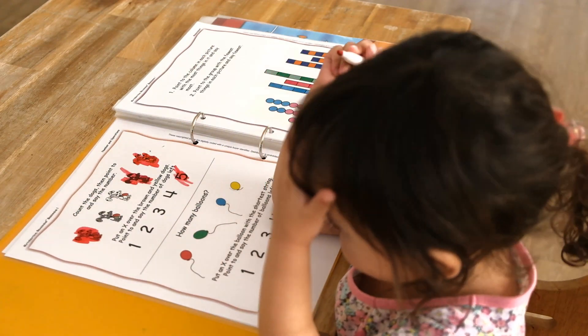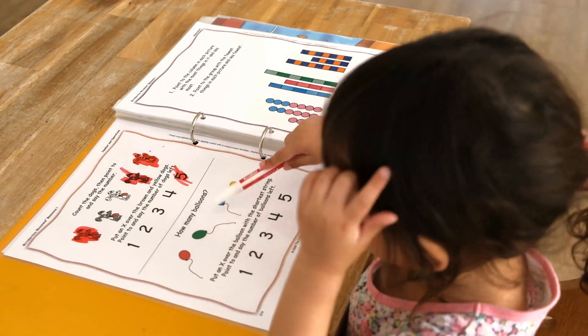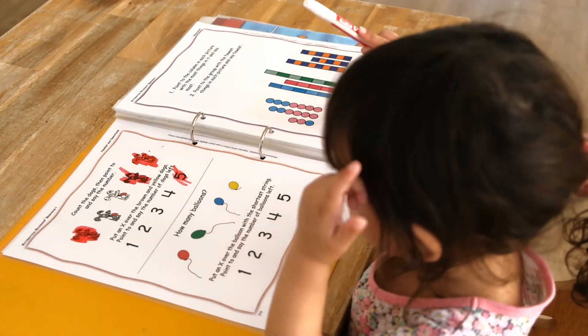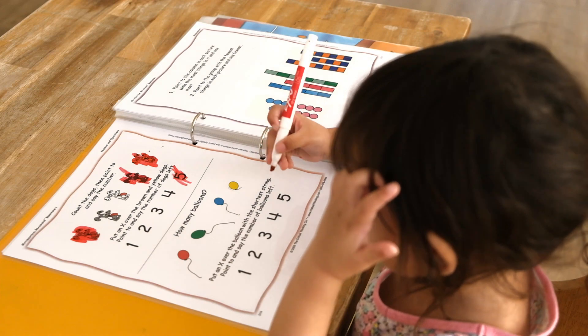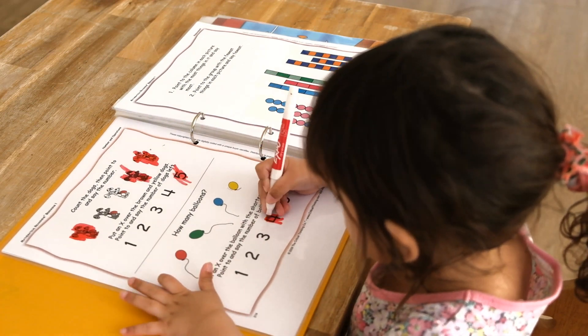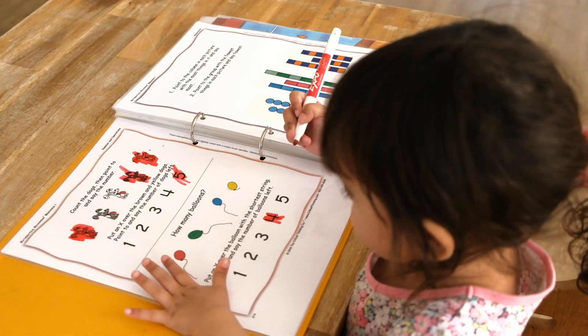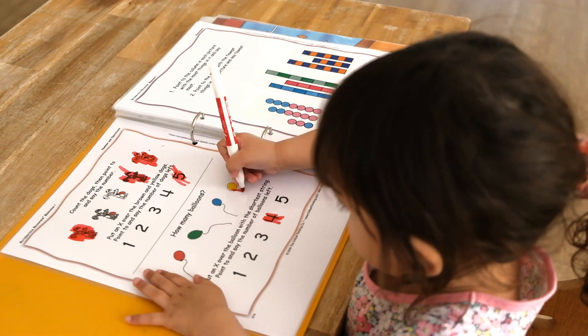Now can you count the balloons? One, two, three, four. Can you circle number four? Can you circle the balloon with the shortest string? Try.